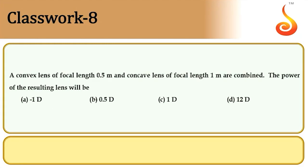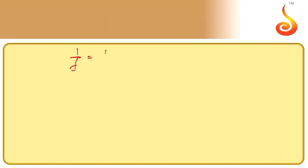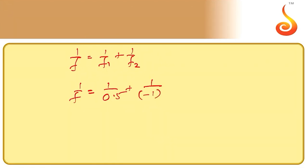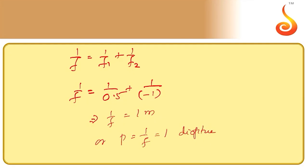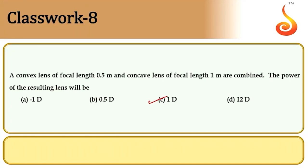Example 8: A convex lens of focal length 0.5 m and a concave lens of focal length 1 m are combined. Then 1/f = 1/0.5 + 1/(-1) = 2 - 1 = 1, so power = 1/f = 1 diopter. The power of the resulting lens is 1 diopter.